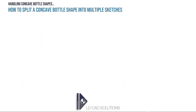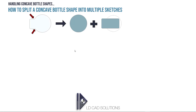So how do we split a concave bottle shape into multiple sketches if we're not happy with filling in the concave shape? Well, for example, this concave shape can be split into a round bottle plus a rectangular bottle with radiused edges. If you add those two together you get this shape and a perfect fit. So you'd have to sketch both shapes and combine them together using the app.